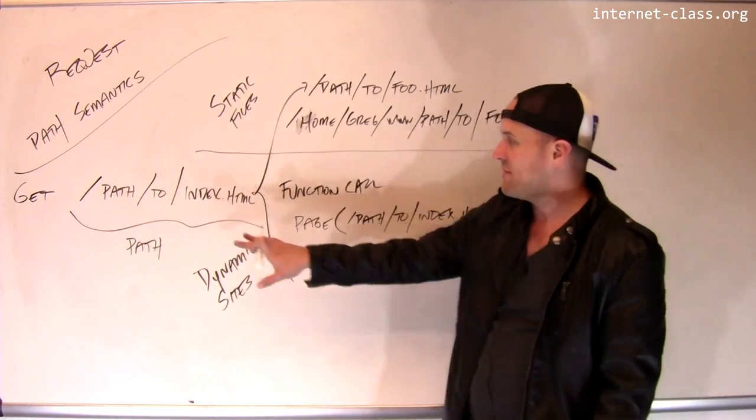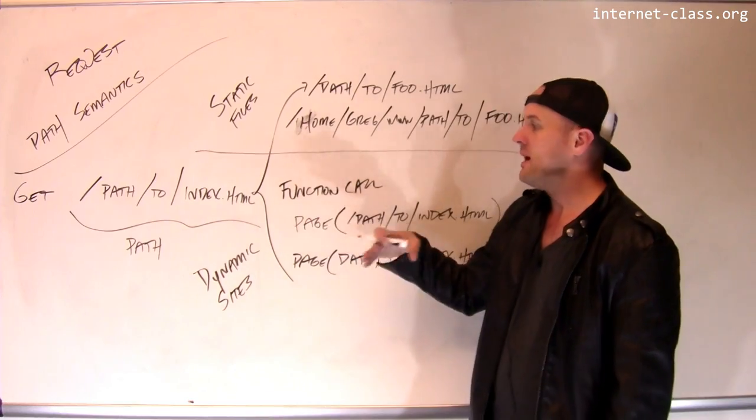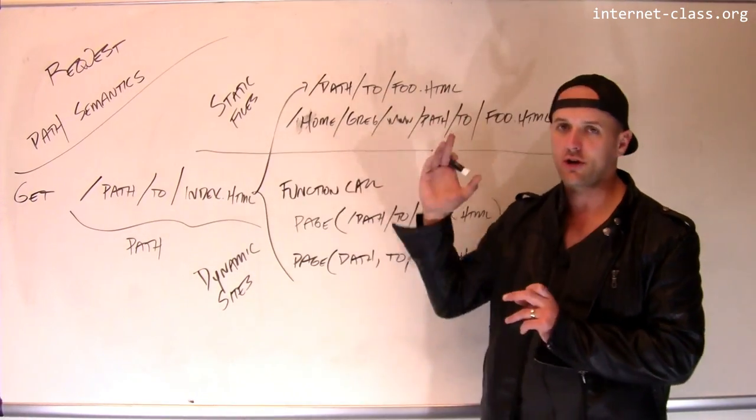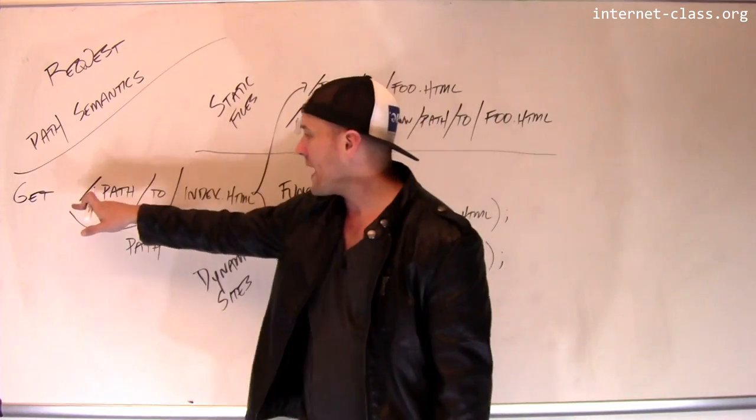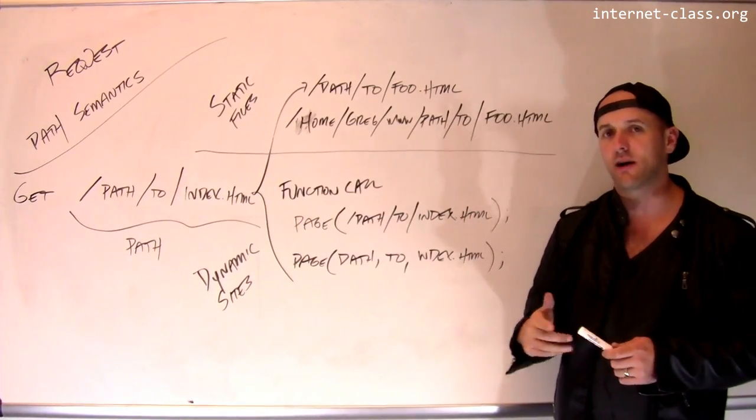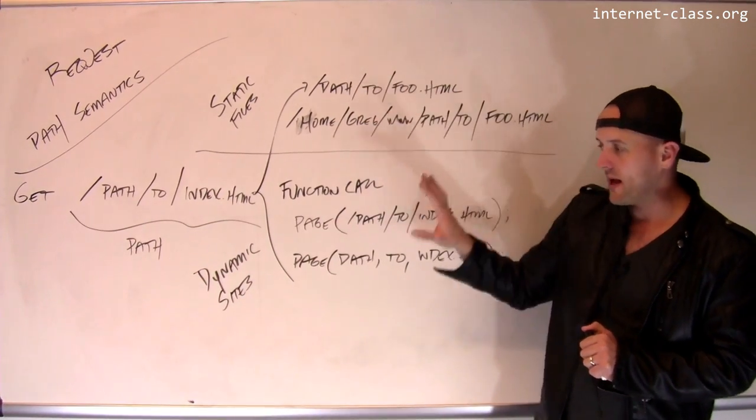So this is kind of interesting. In the old days of the web, we had static files. This was a file name. In the new web, in the dynamic web, this is a function call in some way. And the way that the path is split up and converted into arguments into that function is really entirely up to the web server. So big difference between the old web and the new web.